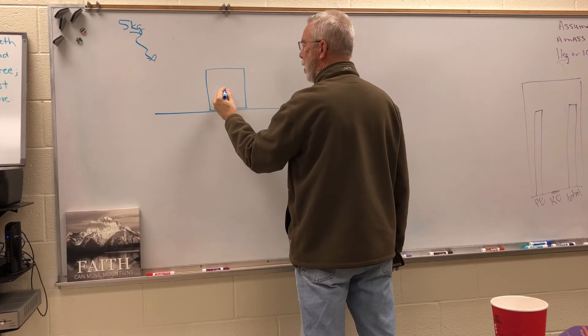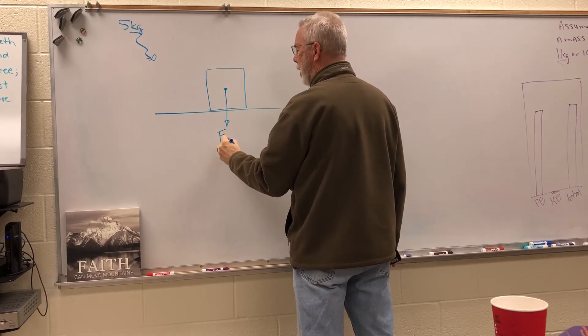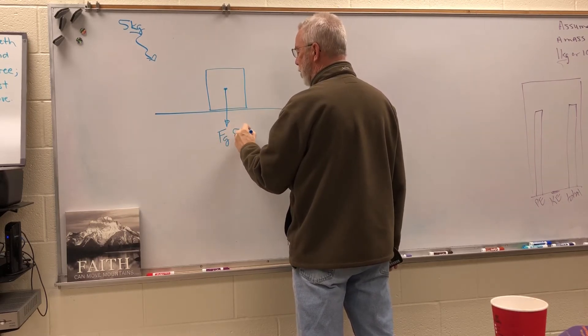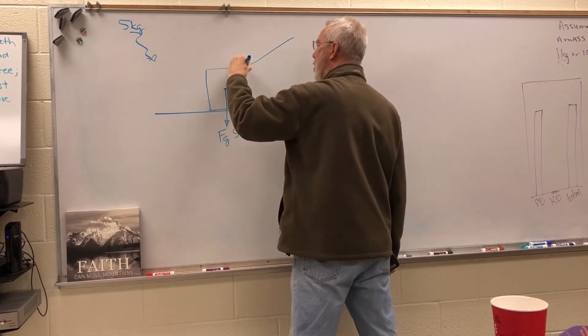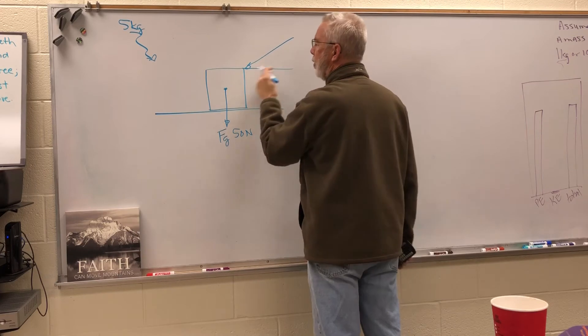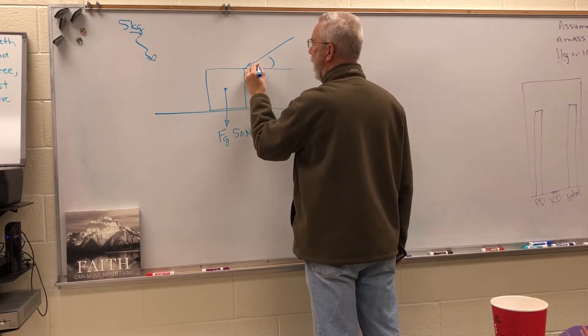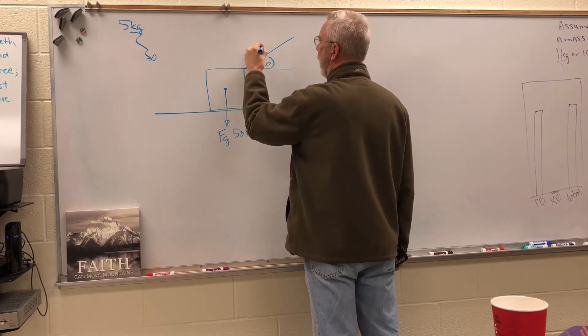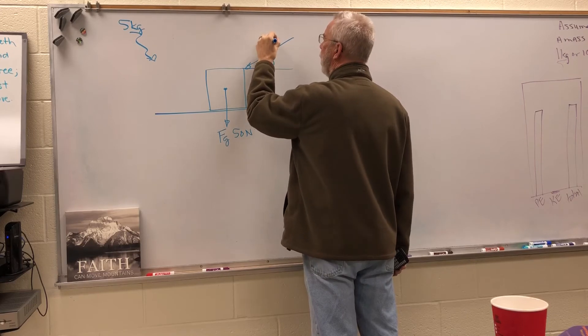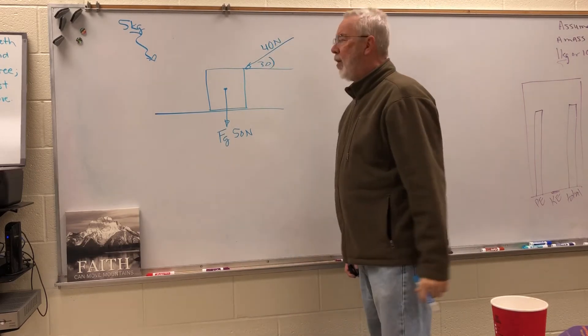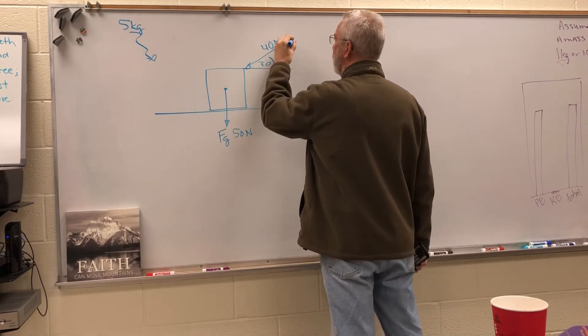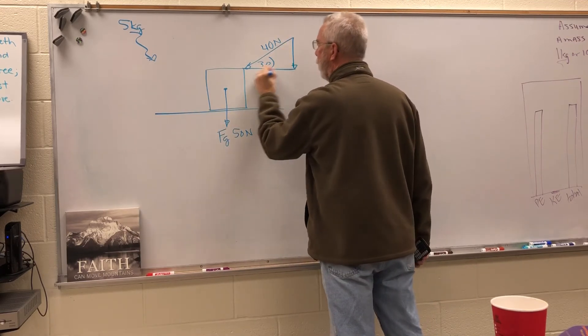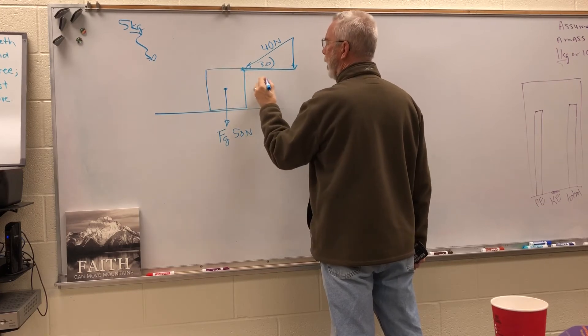So here's the table, here's the box. The box is still going to be five kilograms. We still have a weight of F of g that's going to be 50 newtons. But now let's push down and to the left with an angle of 30 degrees and let's make this a 40 newton force.